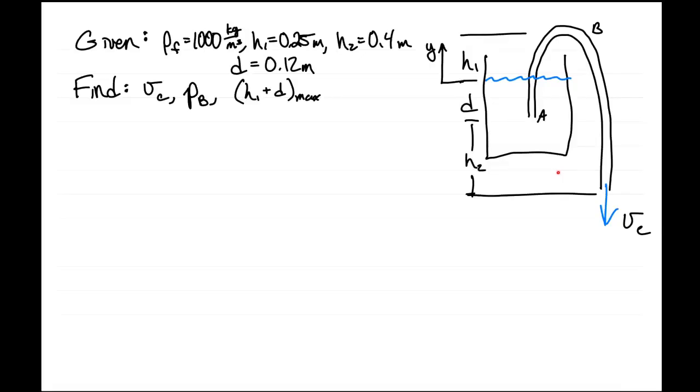In this problem we're told that we have a siphon draining liquid from a container, so we have our container here. We've set our reference vertical position at the present level of the fluid. The siphon starts a distance d down from that, rises to a distance h1 above that, and then ends at a distance d plus h2 below the surface of the water.